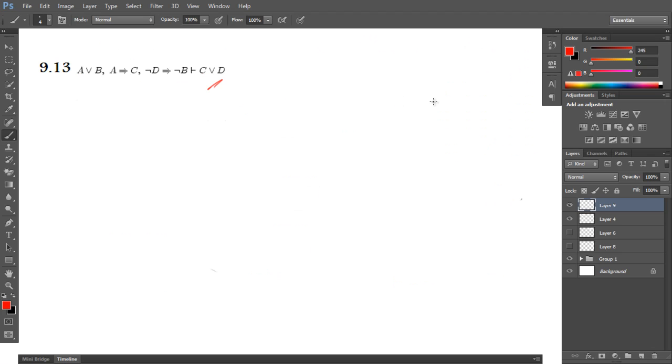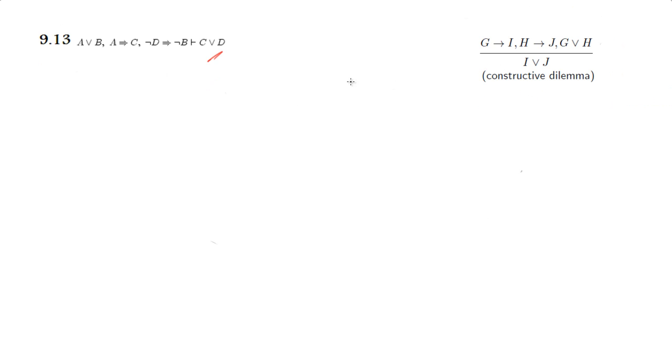Let me go back and show you guys what I mean. This bit down here — as you can see, this A: this is this bit down here, and this bit says that G implies I. As you can see, G implies this I.